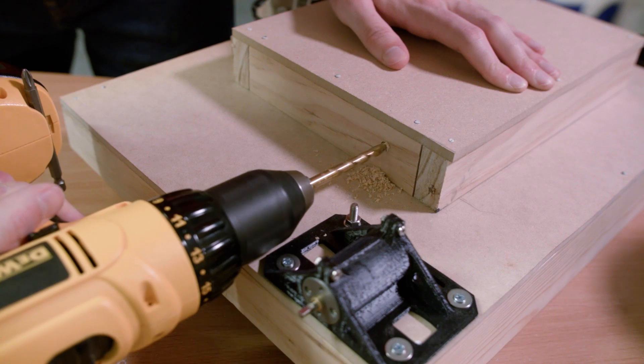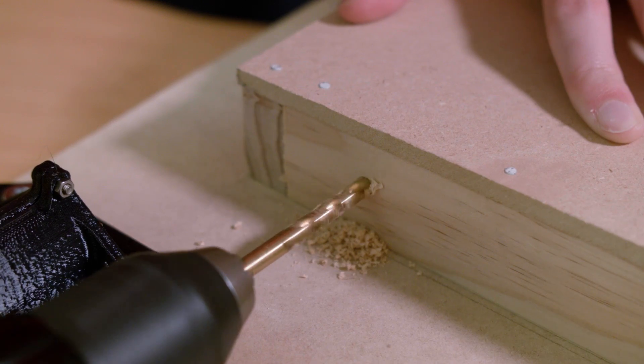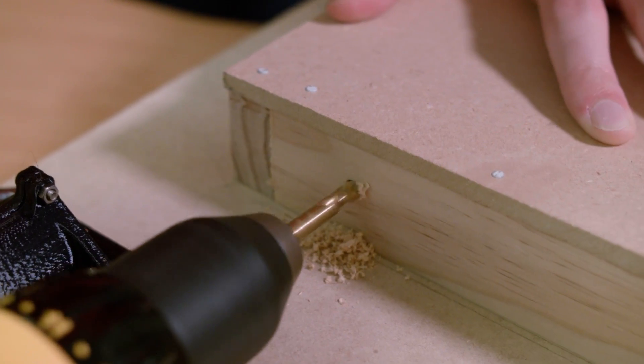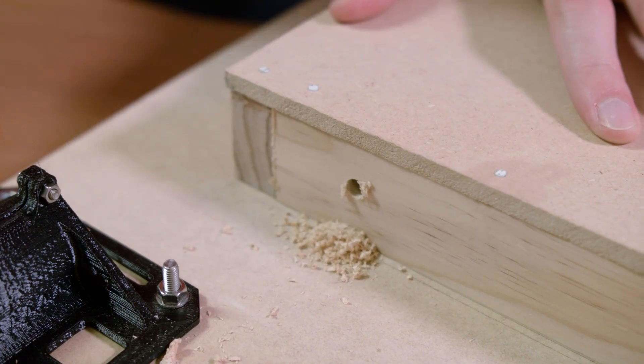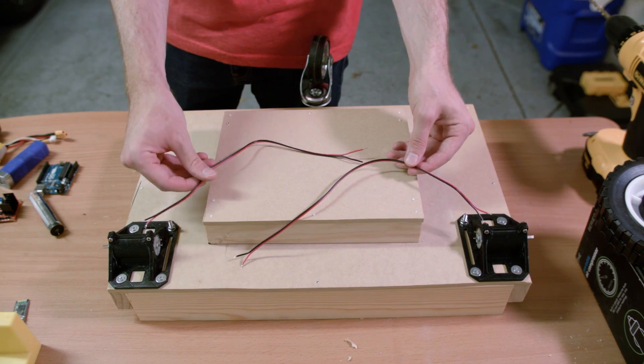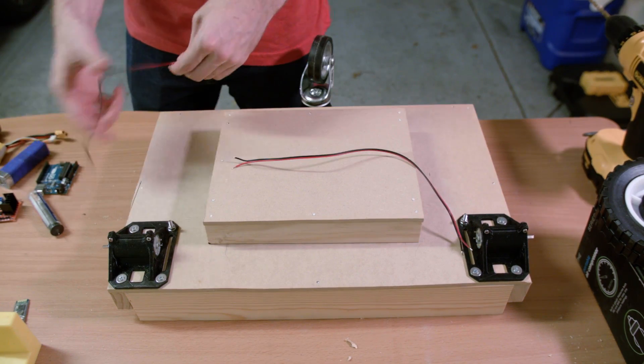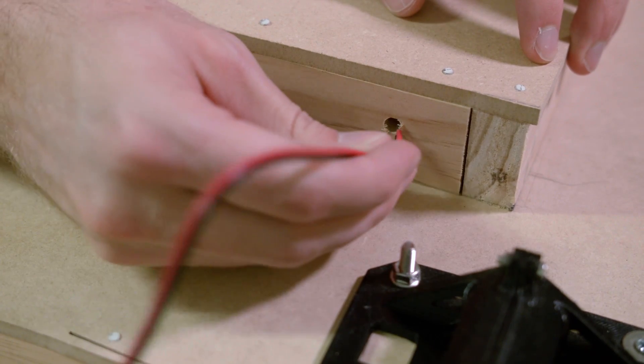We started by drilling a couple holes in the electronics box so that we could slide the wires through from the motors and attach them to our motor driver board. We're using a couple of thin gauge wires here, but that should be fine because the motors don't really draw that much current.